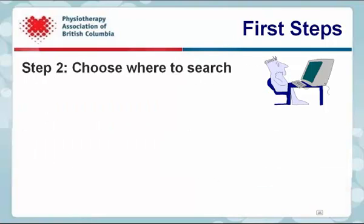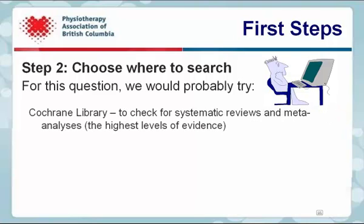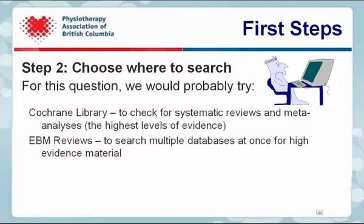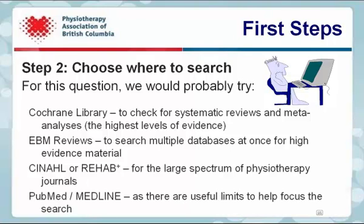Step 2 is choosing where to search. For this question, we would probably try The Cochrane Library to check for systematic reviews and meta-analyses — these are the highest levels of evidence. EBM reviews to search multiple databases at once for high evidence material. CINAHL or Rehab Plus for the large spectrum of physiotherapy journals. And finally, PubMed or Medline, as there are useful limits to help focus the search.